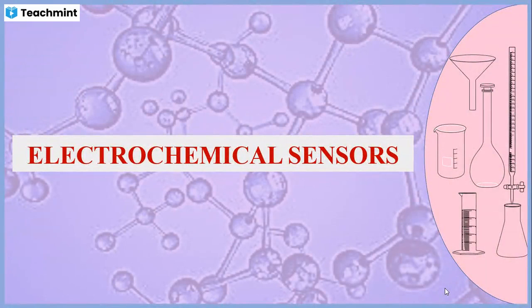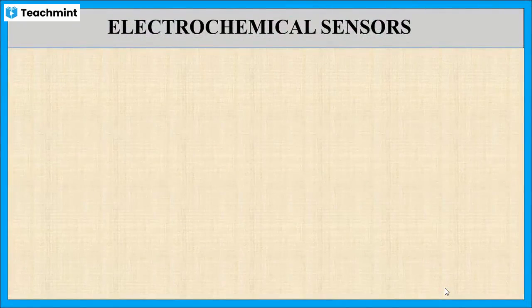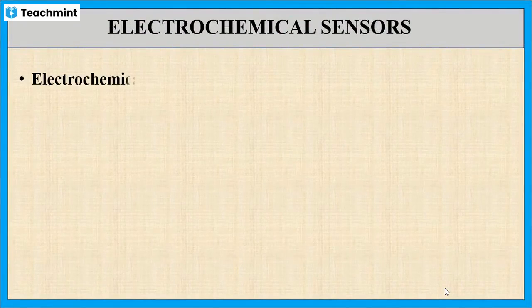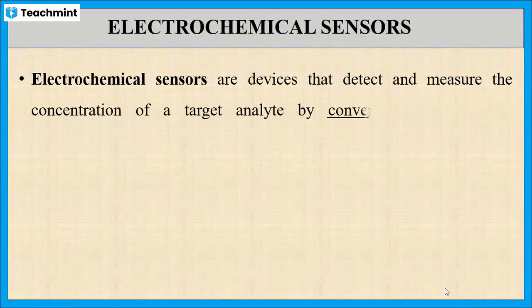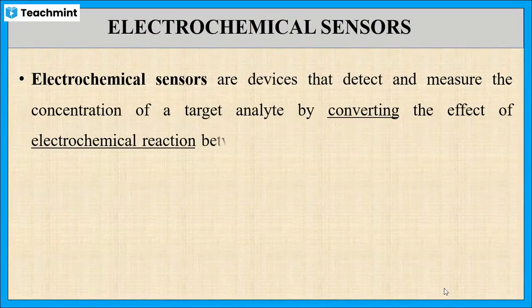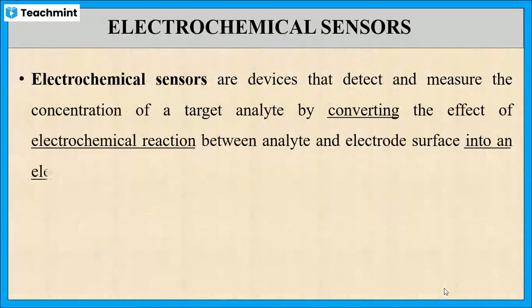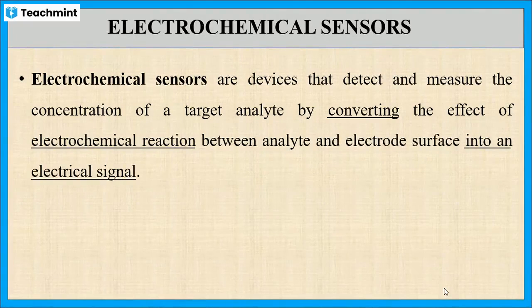In this session, we will discuss electrochemical sensors. Electrochemical sensors are devices which are used to detect the concentration of analyte solution. These sensors convert the electrode-analyte interactions, that means oxidation or reduction, into an electrical signal.